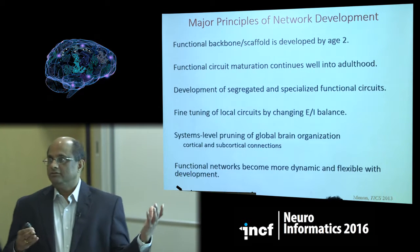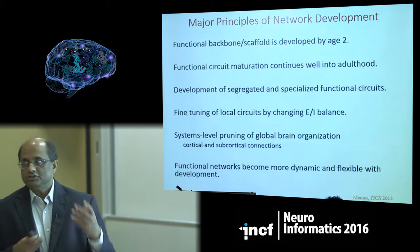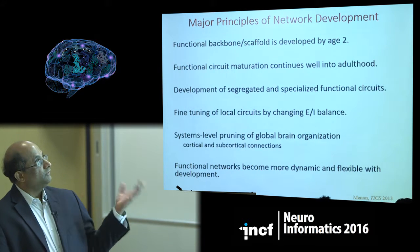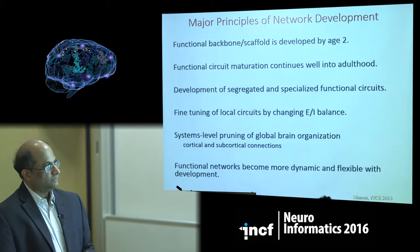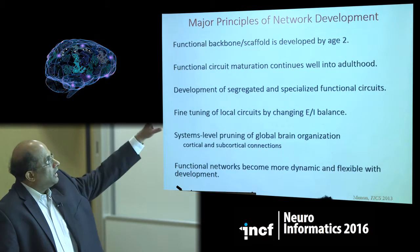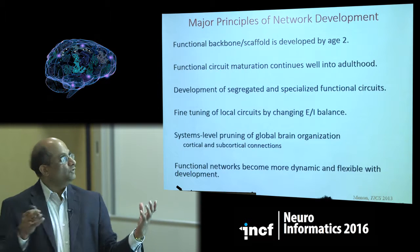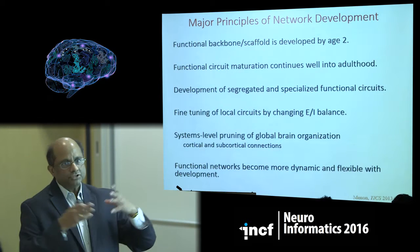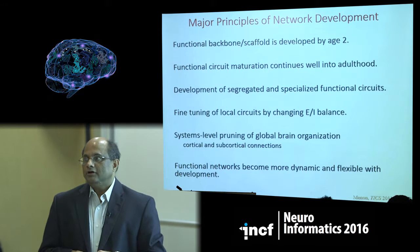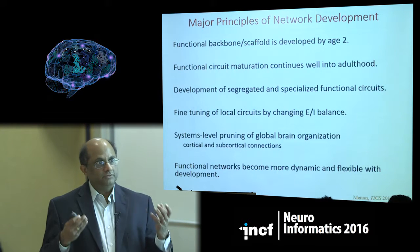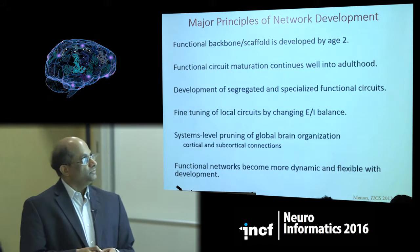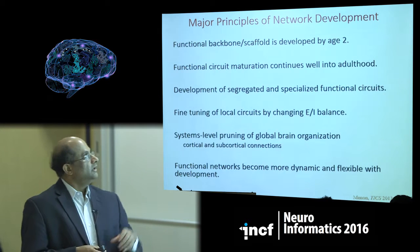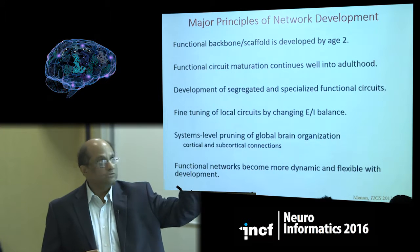Some of the things we've learned from individual node-based analysis as well as whole-brain analyses of these circuits I've summarized in a TICS article. In general, the structural backbone of the system is quite well-developed by age two. The functional connectivity patterns of core systems like the default mode network or the frontal parietal system exist by age two. What changes is the interconnections between different systems, and this functional circuit maturation goes on well into adulthood.